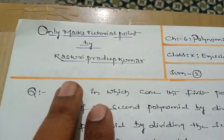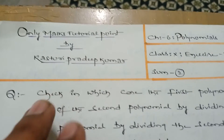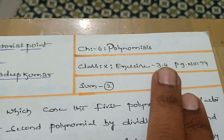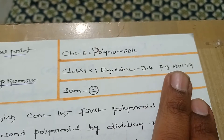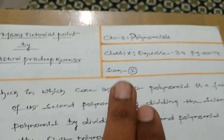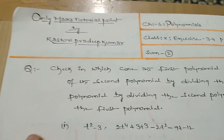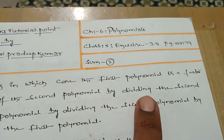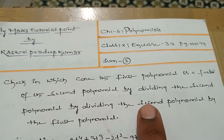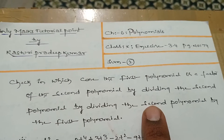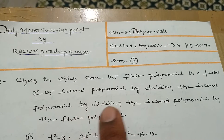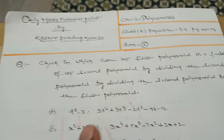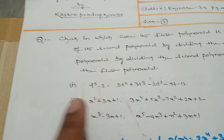Hi guys, welcome to Only My Tutorial Point. Today we are going to discuss Chapter Polynomials, Exercise 3.4, page number 74, second sum. What is given here: check in which case the first polynomial is the factor of the second polynomial, by dividing the second polynomial by the first polynomial.